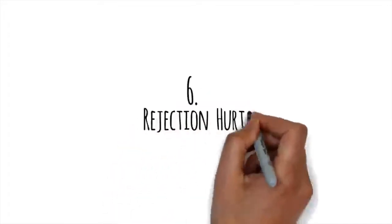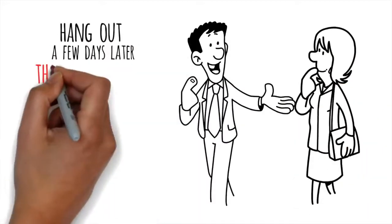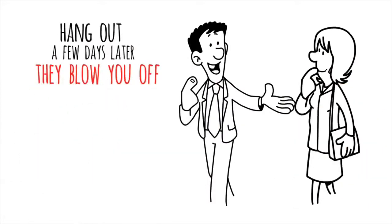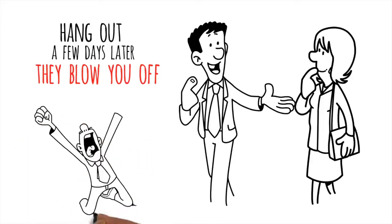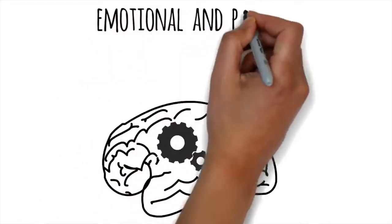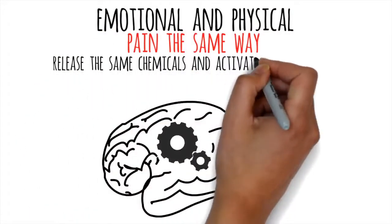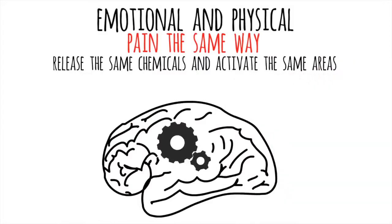Rejection Hurts. Imagine you made a new friend over the weekend, but when you ask them to hang out a few days later, they blow you off. What does that feel like? To your brain, you might as well have been punched in the face. That's because our brains process emotional and physical pain the same way. Both kinds of pain release the same chemicals and activate the same areas. If you've ever wondered why social rejection hurts so much, this is why.